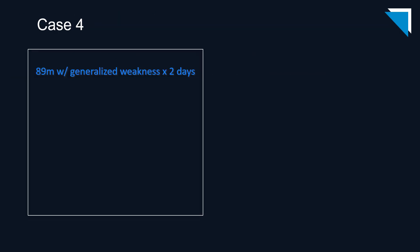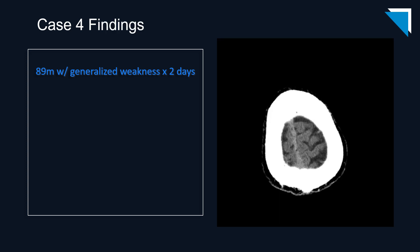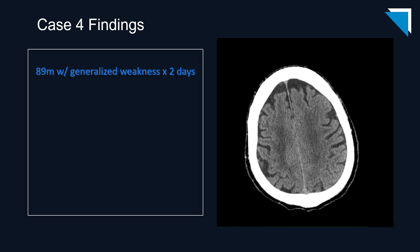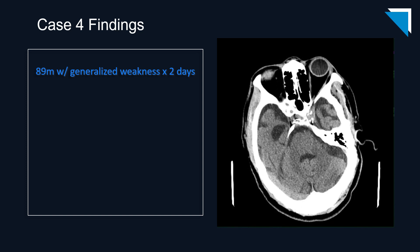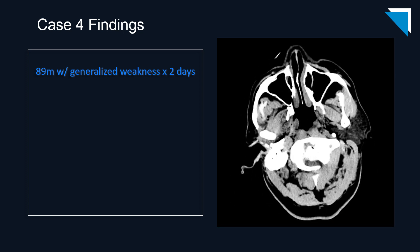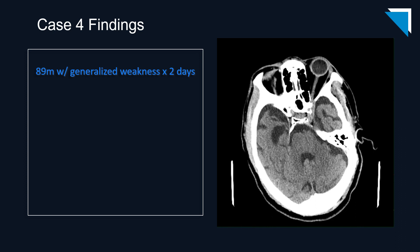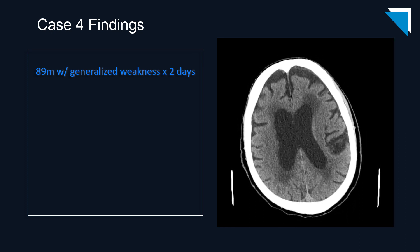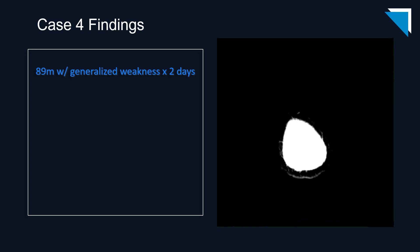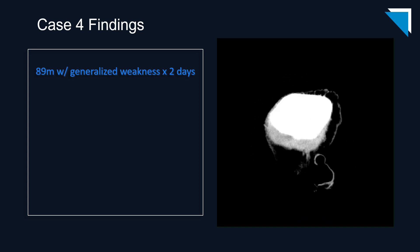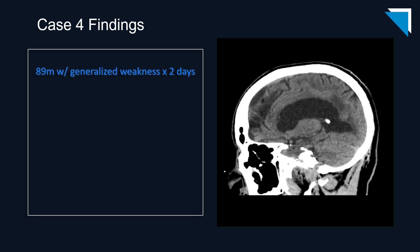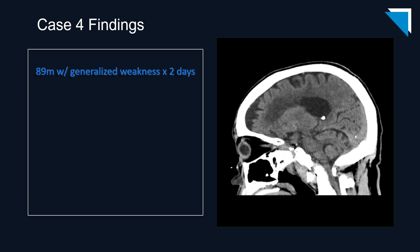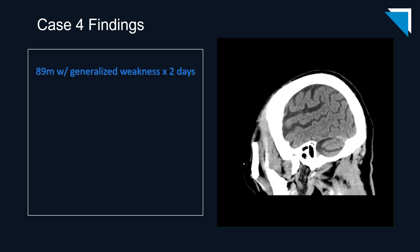Next up is an 89-year-old man with generalized weakness for two days. These are the axial images from a non-contrast CT scan of the head, and the sagittal images from the same patient. Always remember to request the coronal and sagittal reformatted images if you don't have them — there is important pathology that can easily be missed on the axial images.